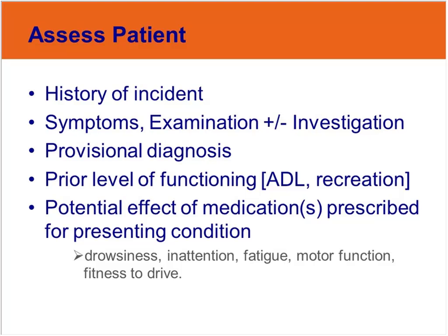The first area involves an approach to assessment of the patient. The priority is to provide an initial assessment with a view to diagnosis and treatment, but it's also important to obtain the patient's history of the incident and the mechanism of injury. This information is recommended for medico-legal purposes and is also required for work capacity certification. During the initial assessment it's also advisable to gain an understanding of the patient's pre-morbid functioning in regards to activities of daily living and recreation, and also to assess whether any currently prescribed medications could result in adverse effects that could impact on a safe return to work and travel.